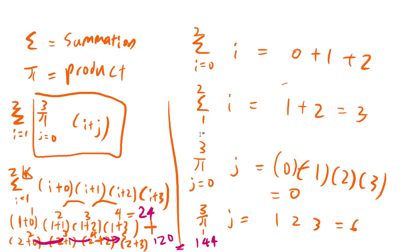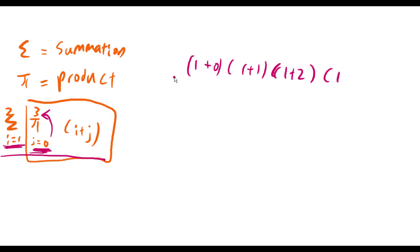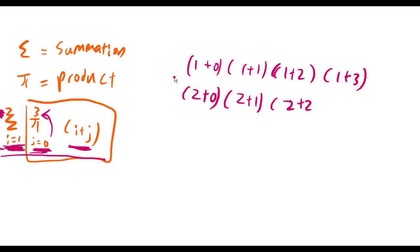I hope you can understand this. Another way of solving is to solve it directly. When solving directly, make sure you know what you are doing. For i equals 1, j runs from 0 to 3, giving (1+0), (1+1), (1+2), (1+3). Then increment i to 2, giving (2+0), (2+1), (2+2), and (2+3).